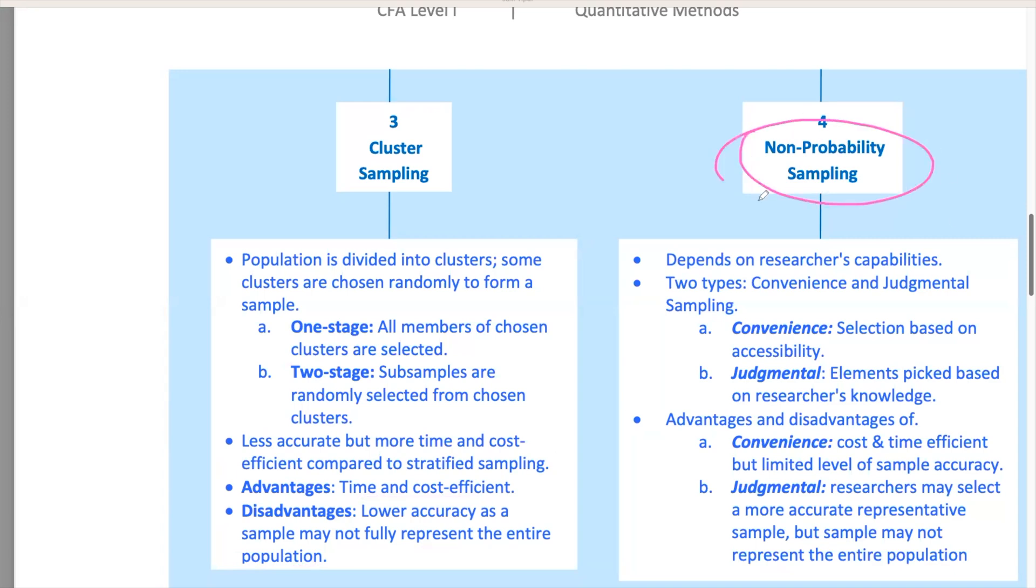Now, on to non-probability sampling. This depends on the researcher's selection abilities. Two major types are convenience sampling and judgmental sampling. Convenience sampling is all about ease of access. It's quick and cost-effective, but might not represent the whole population accurately. This method is often used in exploratory research, where the aim is to get a quick snapshot rather than precise, generalizable results. For example, if you're conducting a survey on shopping habits, you might stand outside a supermarket and ask people leaving the store. This is convenient, but may not be representative of the entire population's shopping habits.